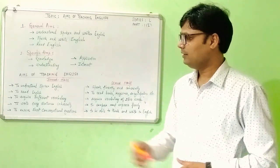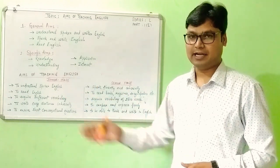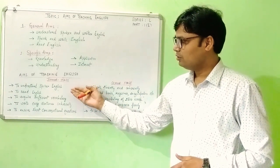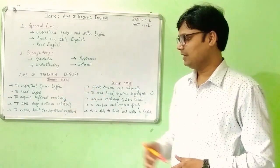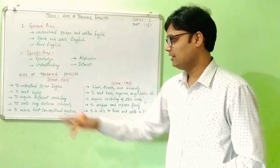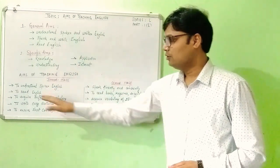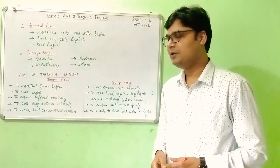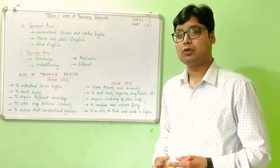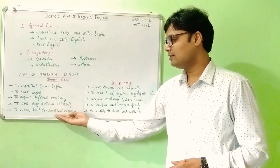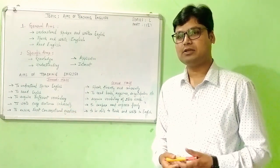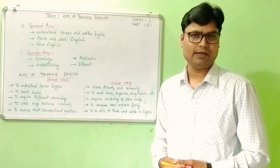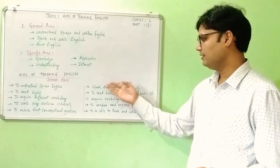Now let us come to the aims of teaching English at junior stage and at senior stage. To teach English at junior stage is to expect a child to understand spoken English, to read English, to acquire sufficient vocabulary, to write easy sentences coherently, and to answer short conversational questions like 'What is your name?', 'How are you doing?', 'Where do you live?', and so on.